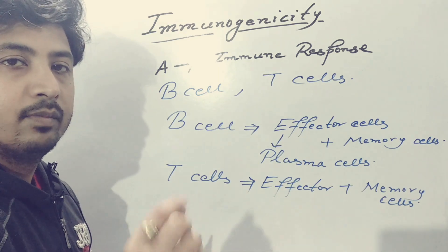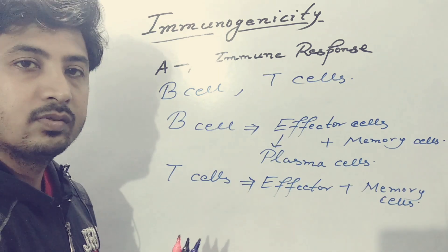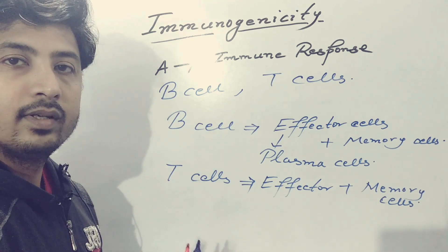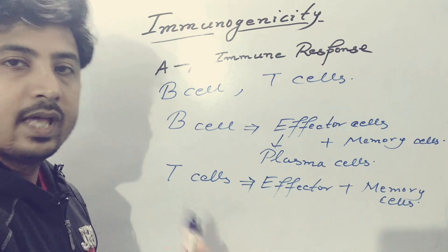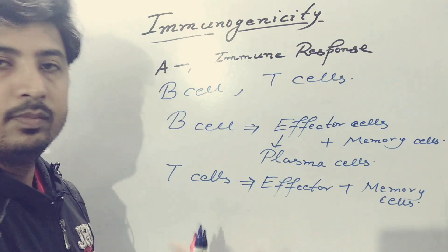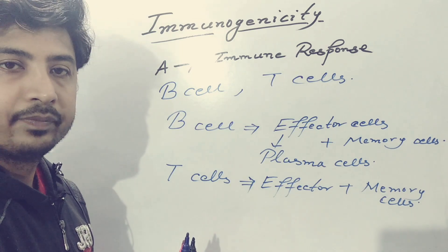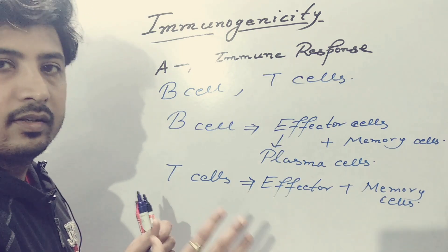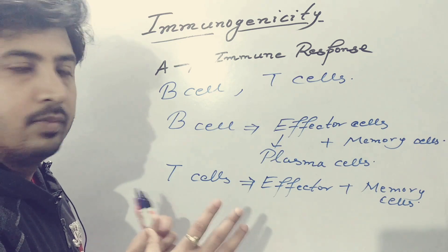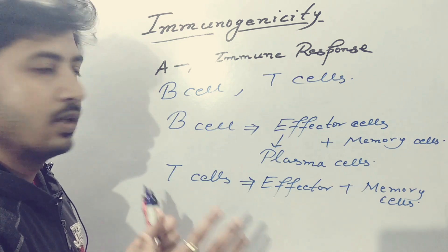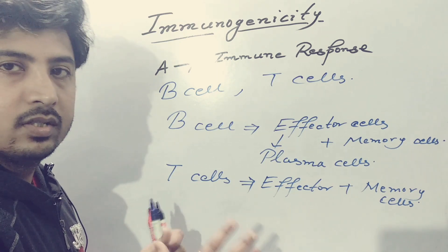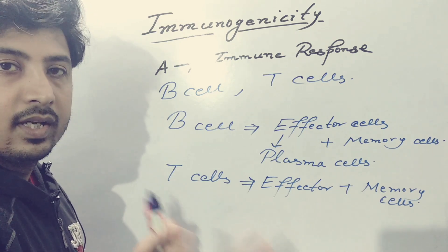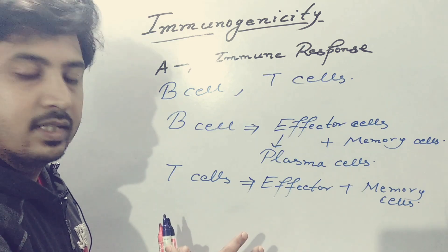The particular substance which makes this happen is called an immunogen. So let's keep that in mind and now move on to antigenicity.